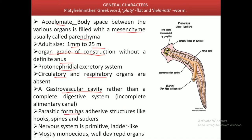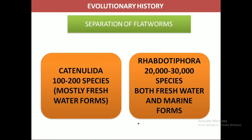The parasitic forms of this group have adhesive structures in the form of hooks, spines, and suckers. Their nervous system is of a primitive type and resembles a ladder. These forms are hermaphrodite, monoecious, and their reproductive organs are well developed.